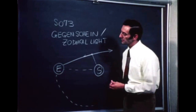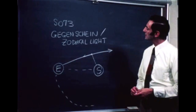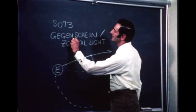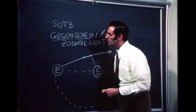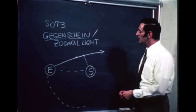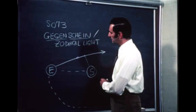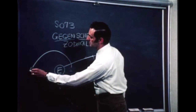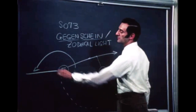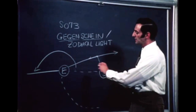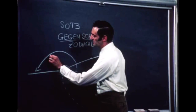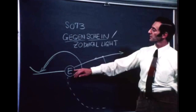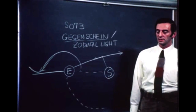The Gegenschein is another manifestation of the zodiacal light and is derived from the German word which means against glow or brightness. It is a brightening in the sky opposite the sun from the Earth, so that if one looked in this direction — away from the sun, from the Earth — one would see that the sky would get darker and then start to get brighter in this region. This brightening opposite the sun from the Earth is the phenomenon called the Gegenschein.